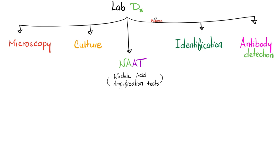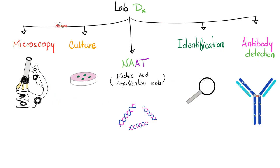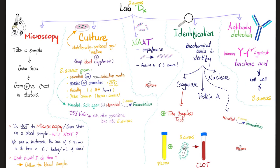Now let's diagnose Staph aureus. The methods include microscopy, culture, nucleic acid amplification test, DNA test, identification, and antibody detection. For microscopy: take a sample — for example, from a skin abscess — and send it to the lab. The lab will examine it under the microscope after performing a Gram stain.